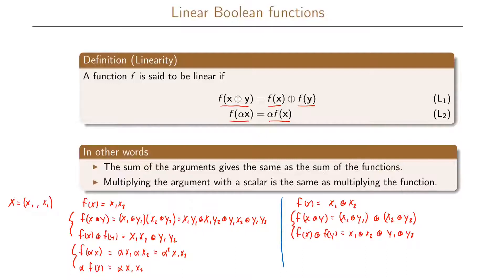Clearly these two are the same. So let us check for the other property that must hold. Here we have that f of alpha x equals alpha x1 plus alpha x2, and we have that alpha times f of x equals alpha times x1 plus x2, which equals alpha x1 plus alpha x2. And also we can see that these two are the same. So from this we can conclude that this function here is a linear function, while this function here is not a linear function.